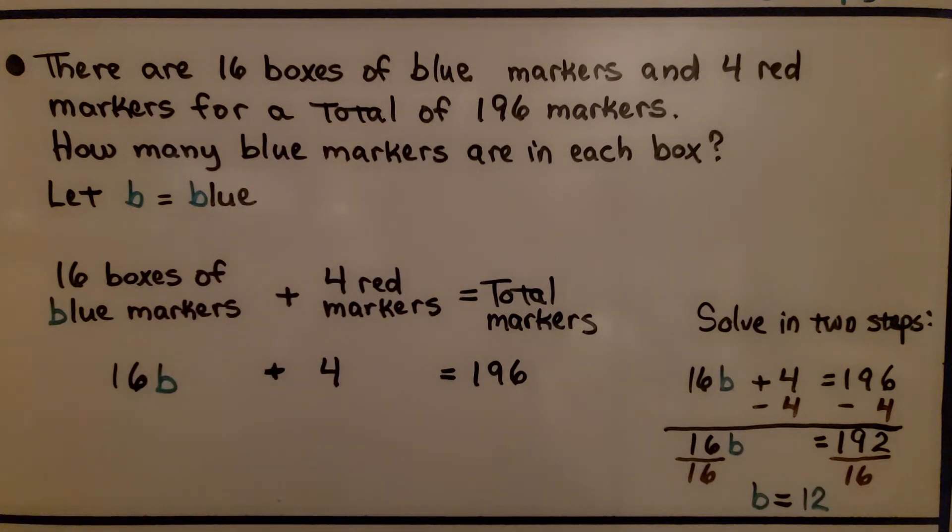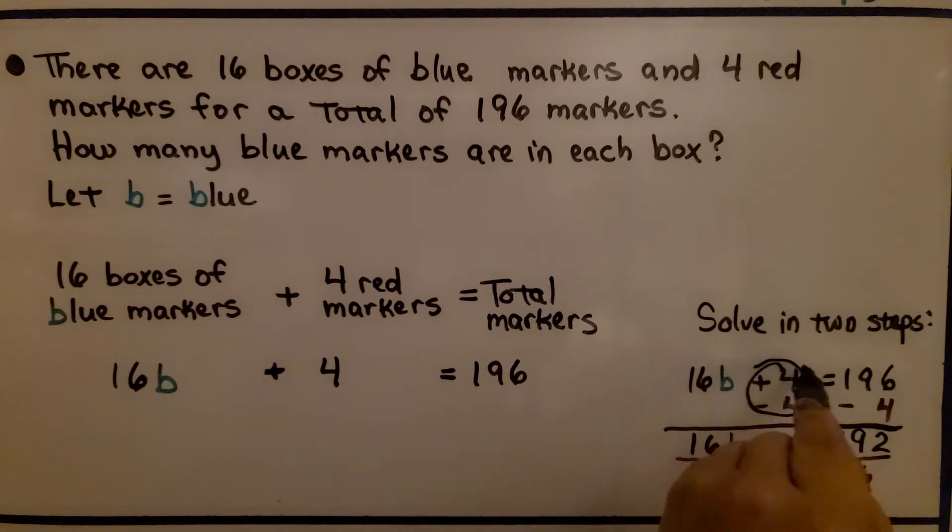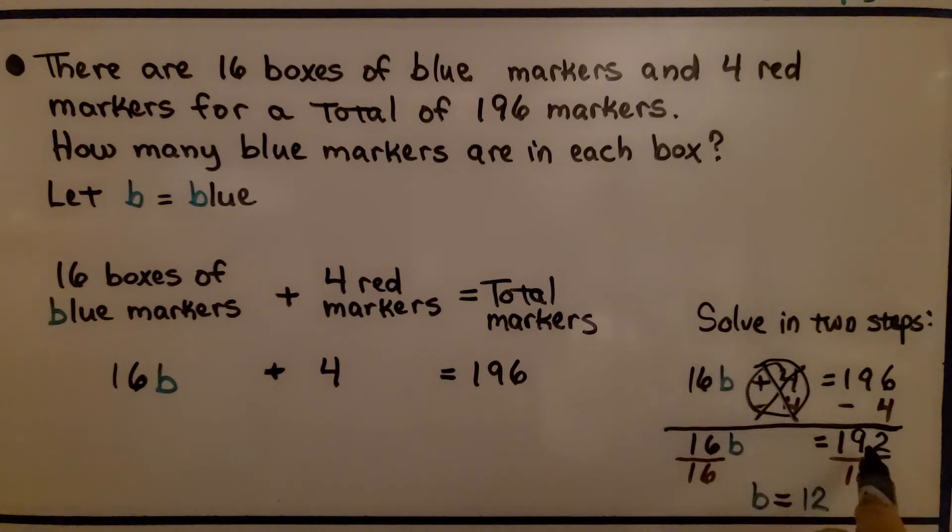We can solve this in two steps. We have 16b plus 4 equals 196. We can get rid of this plus 4 by doing minus 4 on each side of the equal sign. What we're doing is adding a negative 4. We have plus 4 and minus 4. That creates a zero pair and eliminates it. We have minus 4 on this side that gives us 192.